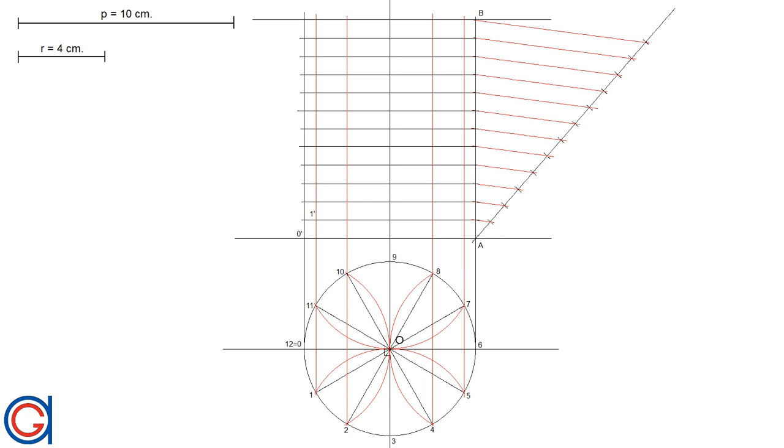Then 1, 1 prime is the second horizontal level. Then 2, 2 prime is the third level. We will continue this: 3, 3 prime, which will represent the third level; 4, 4 prime, which represents the fourth level.